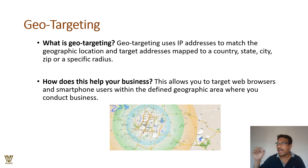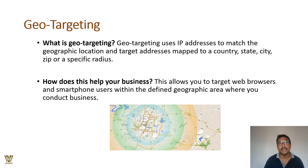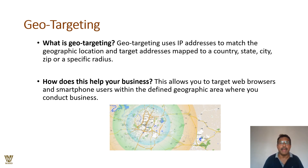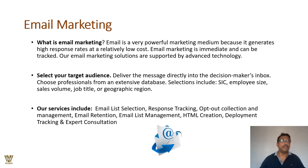Geo targeting is based on IP (Internet Protocol) addresses — those numeric addresses like three digits dot three digits dot three digits dot three digits associated with every website and internet connection. When you access the internet through an IP address, that gateway can be matched to a geographic location, and a target address can be mapped. This helps your business by allowing you to target web browser users defined within a specific geographic location.